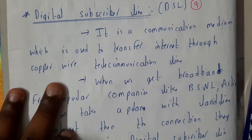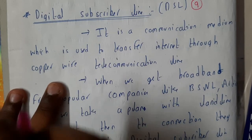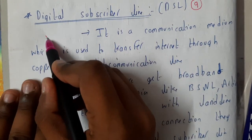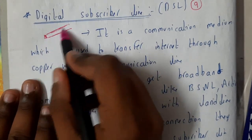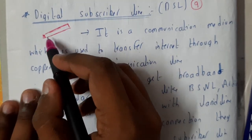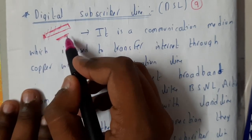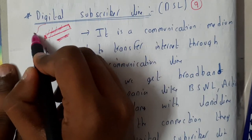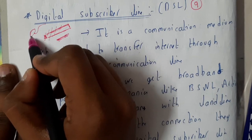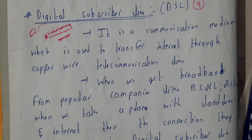Hello guys, we are back with our next tutorial. In this lecture we'll be going through Digital Subscriber Line. When you apply for a government internet service like BSNL, or other services like Airtel, they also provide this — a single package for a landline and the internet. For your home, you'll be given only a single wire, and in that wire we will have both the internet and our phone line.